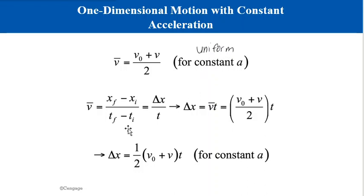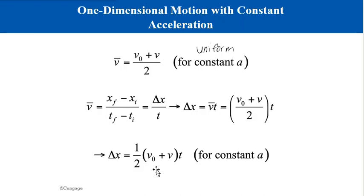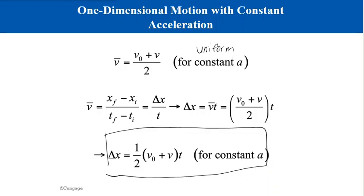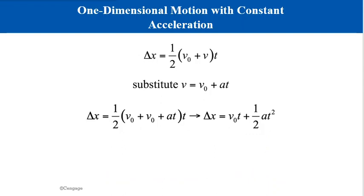From there, we can plug in the equation for average velocity from the previous equation on constant velocity, then rearrange to find displacement. Plugging in the average velocity expression for an object moving at constant acceleration, we end up with a displacement equation for constant acceleration. Substituting further, we arrive at a familiar form.